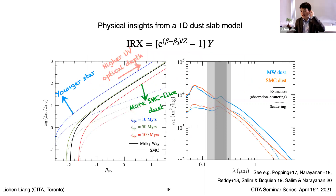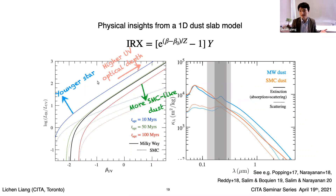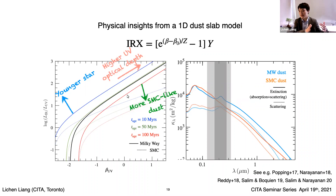With this analytic solution, along one direction is the UV optical depth — the thickness of the slab — that drives the solution along the curve. In the perpendicular direction, there are two things: stellar population and dust attenuation property, which are actually degenerate. The challenge with observation is that it's not easy to disentangle stars and dust. For a young stellar population, you shift the relationship to the left; for older populations, it shifts right. When you change dust properties, you also change the shape and normalization of the curve.